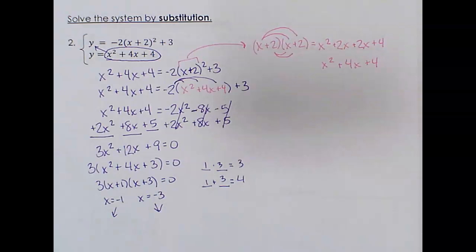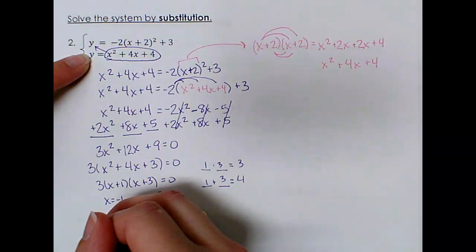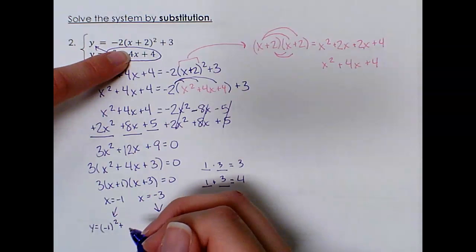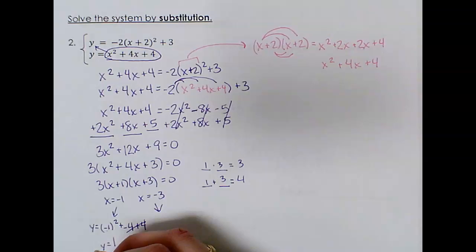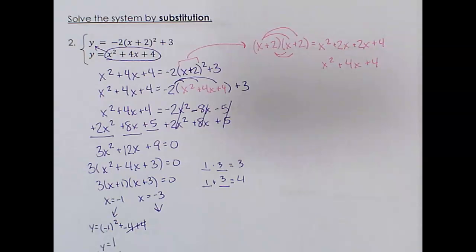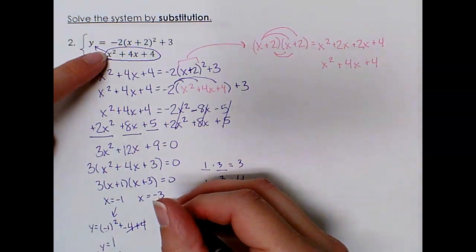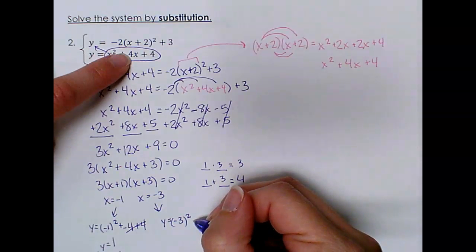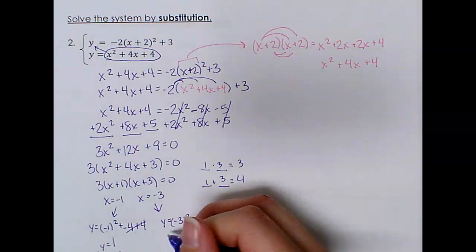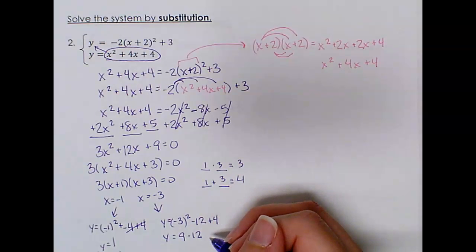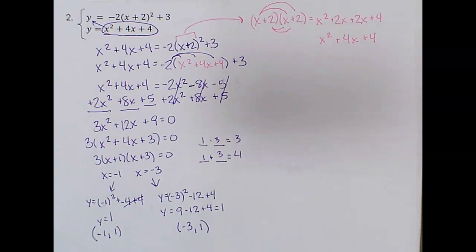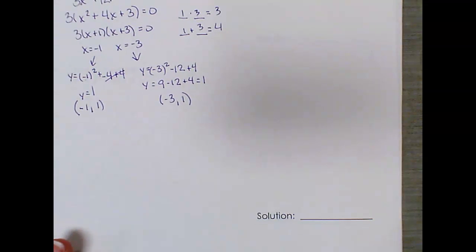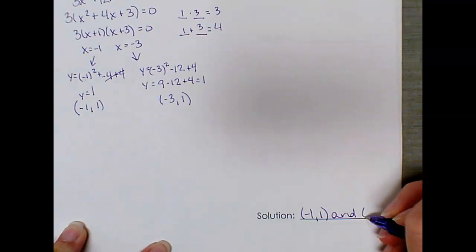Each of those x values needs to be substituted into an equation to get the y values. Substituting into the first equation: y equals negative 1 squared plus 4 times negative 1 plus 4 — that's 1 minus 4 plus 4, which is 1. So one ordered pair is negative 1 comma 1. For x equals negative 3: y equals negative 3 squared plus 4 times negative 3 plus 4, which is 9 minus 12 plus 4, that equals 1. So the other ordered pair is negative 3 comma 1. My two solutions — where the parabolas intersect — are negative 1 comma 1 and negative 3 comma 1.